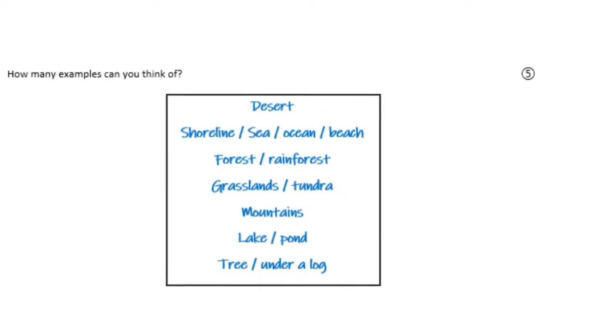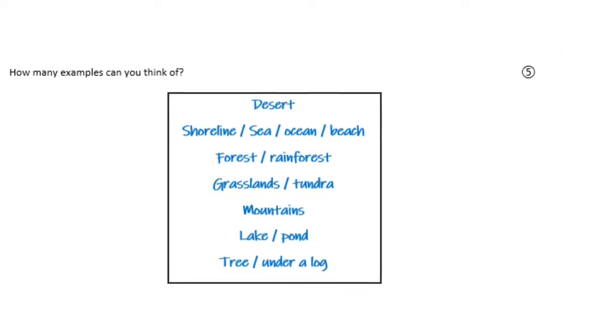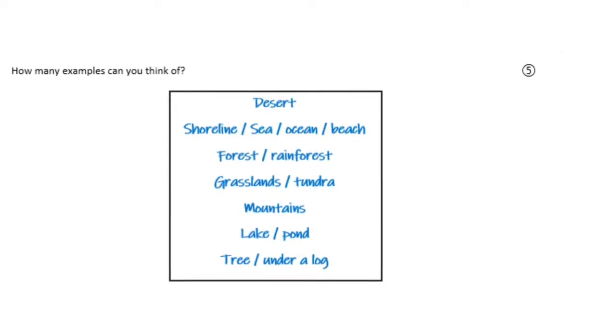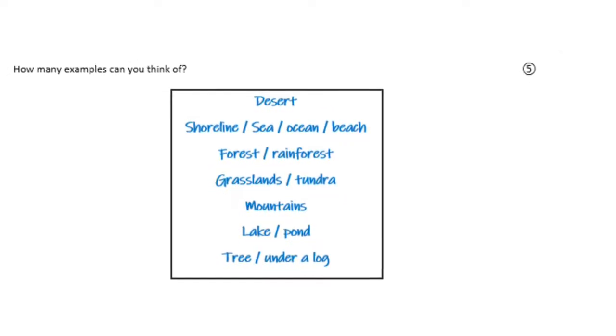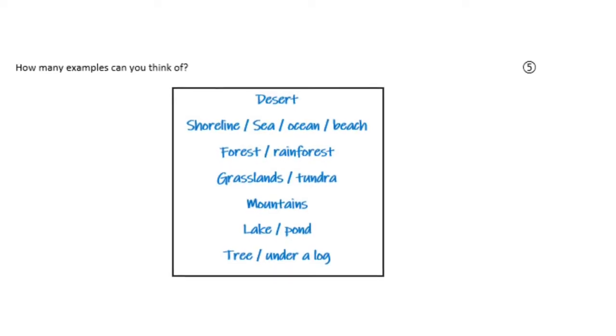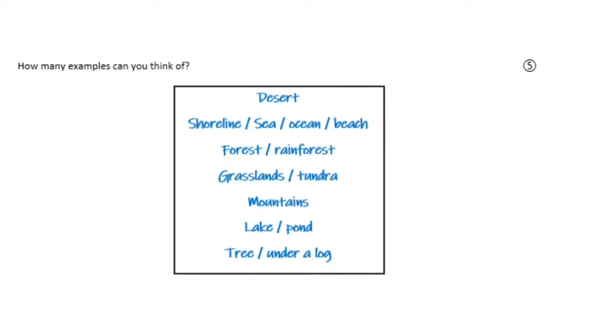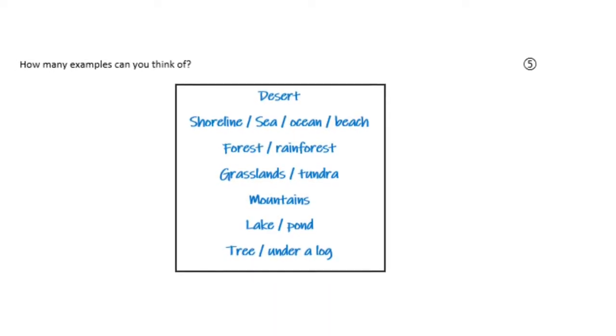Give yourself a mark out of five. If you've got five examples of habitats, you can have five marks. If you've got four, you would have four, and so on.